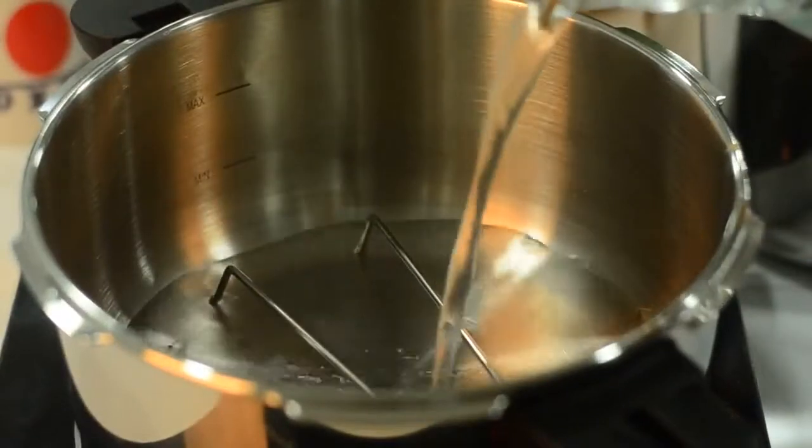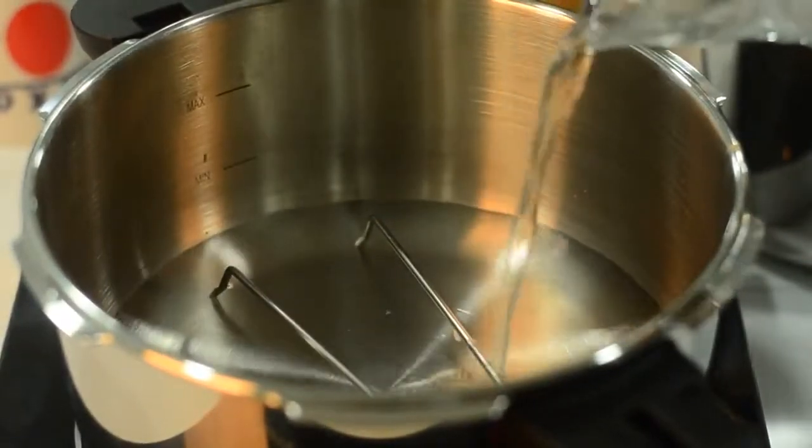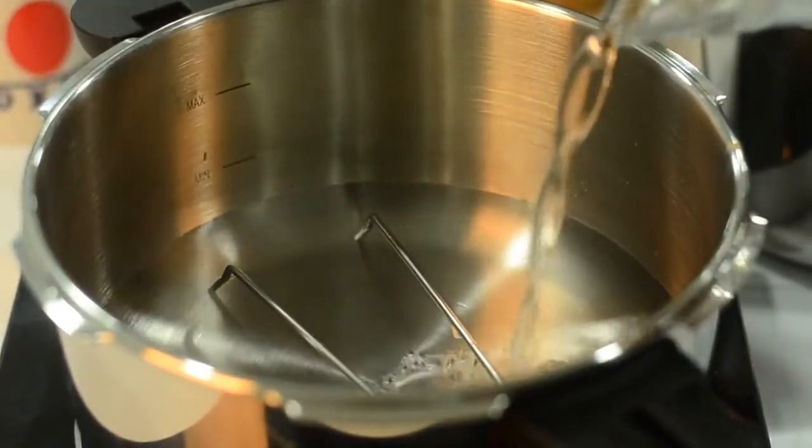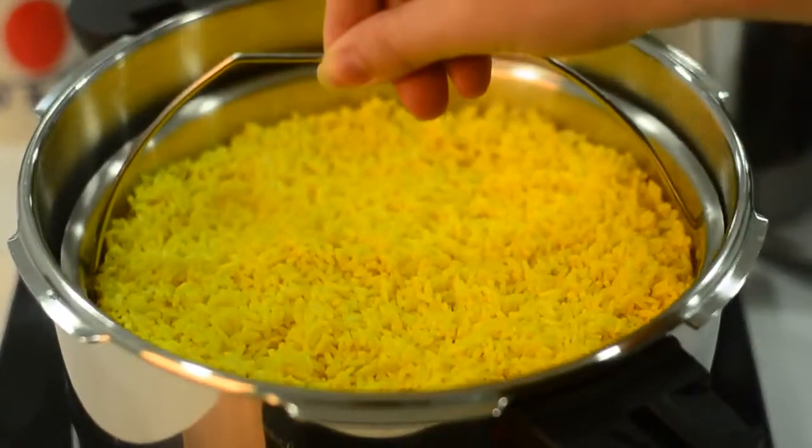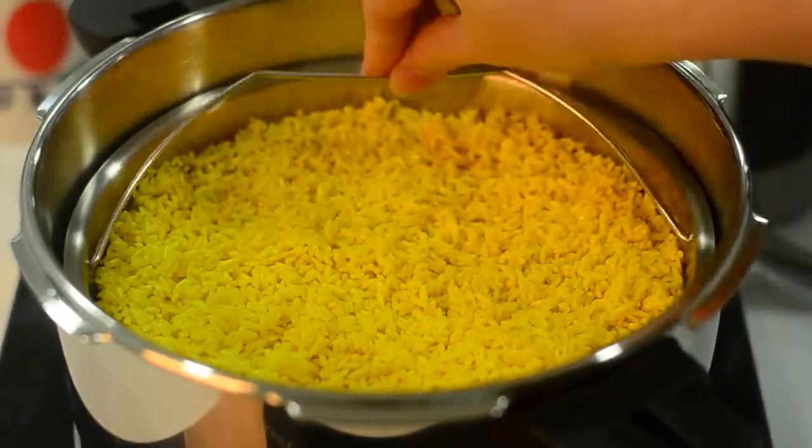Next, pour water into the pressure cooker. Place an aluminum foil in the steamer rack before adding in the turmeric glutinous rice. Then place the steamer rack in the cooker.